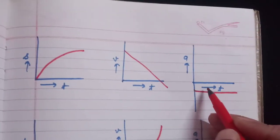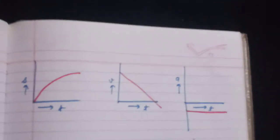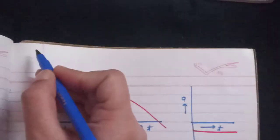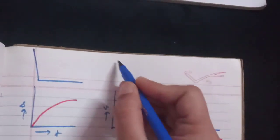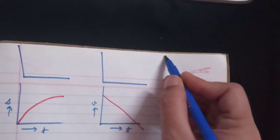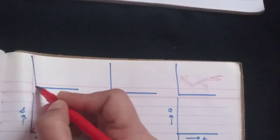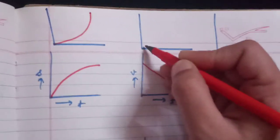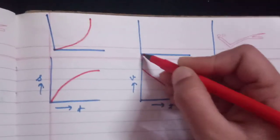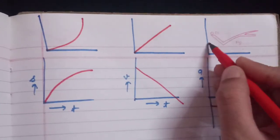If the ST graph is like this, the VT graph is like this and the AT graph follows accordingly.